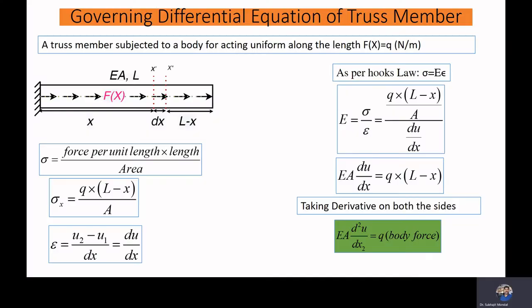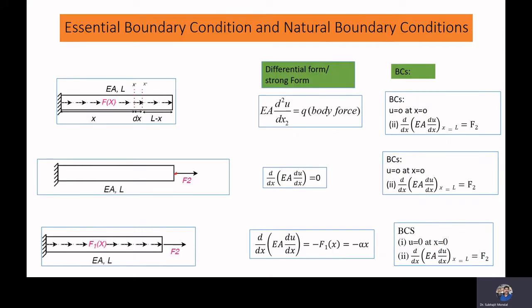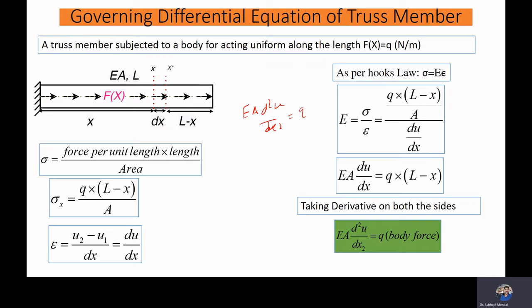Here we will try to obtain the differential equation for a truss member. The governing equation is EA d²u/dx² equal to the body force. We will also see how to write the differential equation if a point force is acting, and how to obtain it when both point force and body force are acting. Our aim is to obtain the governing differential equation for a truss member.